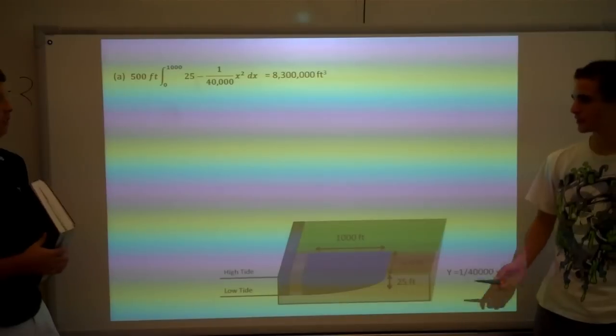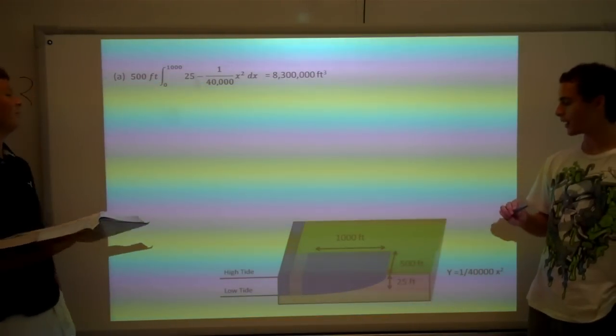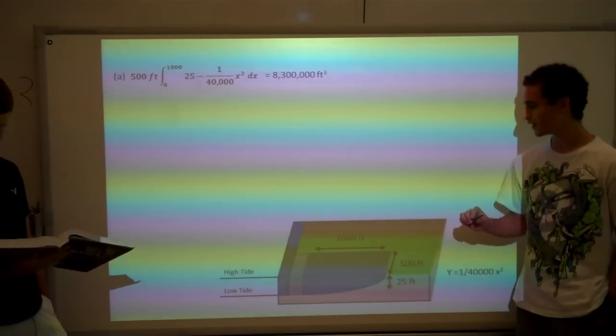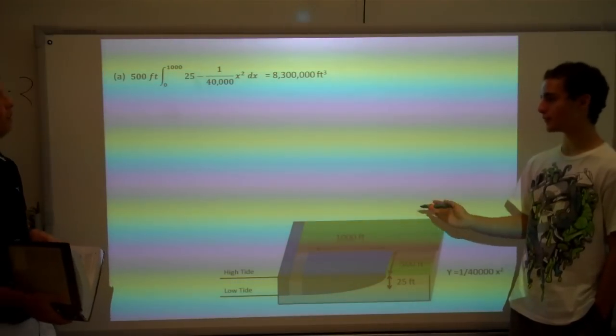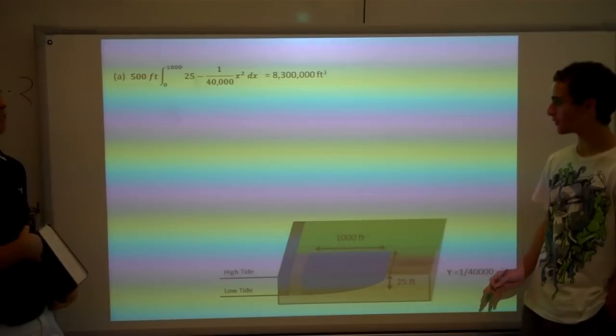Now for part B, it asks you to find the total amount of energy that can be derived from filling this basin. And we've changed it into filling the total amount of energy that you derive from a day of filling and emptying, which is four cycles.